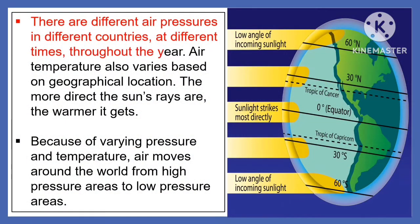There are different air pressures in different countries at different times throughout the year. Air temperature also varies based on geographical location. The more direct the sun's rays are, the warmer it gets. Because of varying pressure and temperature, air moves around the world from high-pressure areas to low-pressure areas.